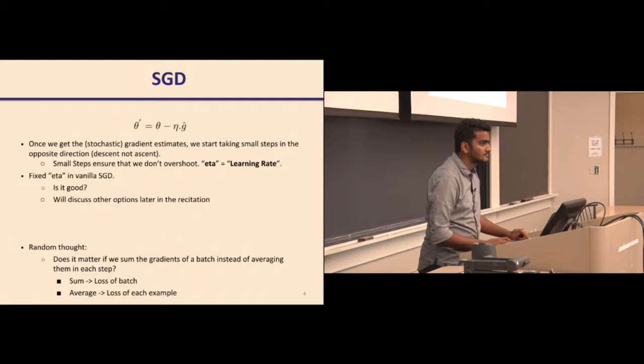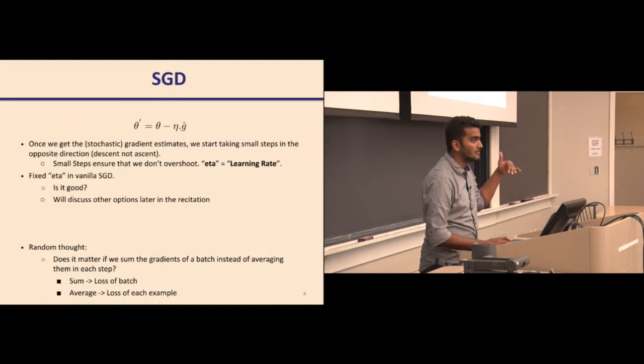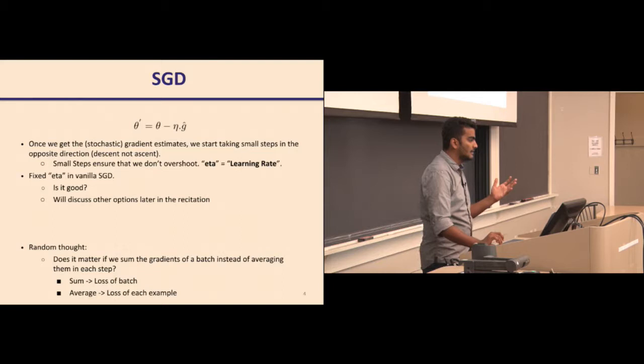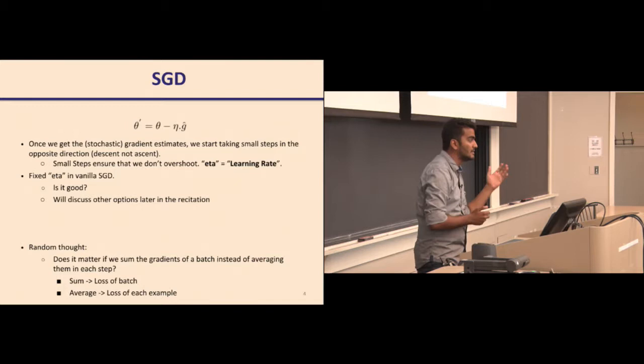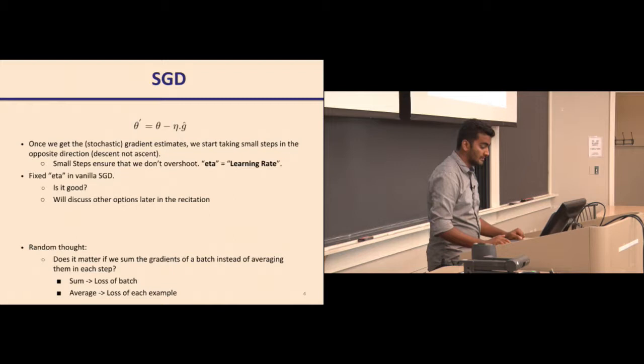Once we start moving towards the local minimum, we want to reduce the update magnitude so we do not overshoot. Also, gradients are multidimensional — some values in the gradient matrix may be high and some low. Multiplying all gradients by a single scalar is not ideal and is possibly not going to give you the optimum solution. We can also either average or sum the loss across a batch. If you sum, the loss depends on batch size; if you average, batch size does not matter.